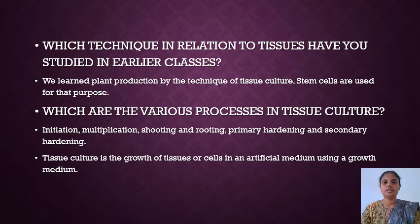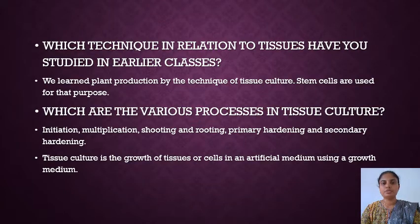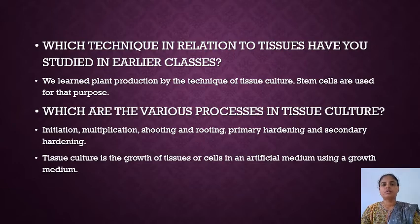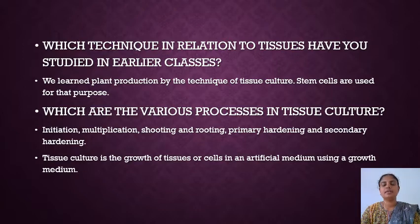A technique related to tissues that we learned in earlier classes is plant production using tissue culture techniques. Stem cells are used for this purpose. The various processes in tissue culture are initiation, multiplication, rooting and shooting, primary hardening and secondary hardening.